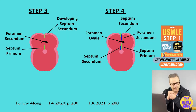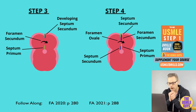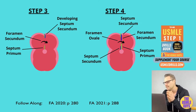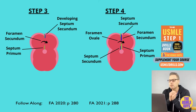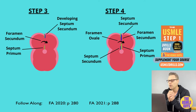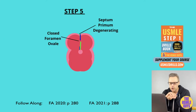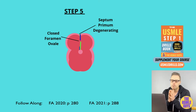In step three, the septum secundum develops on the right side of the septum primum, while the foramen secundum is maintaining the right to left shunt. In step four, the septum secundum expands and covers most of the foramen secundum. The residual foramen is then known as the foramen ovale. In step five, the remaining portion of the septum primum forms the one-way valve of the foramen ovale.